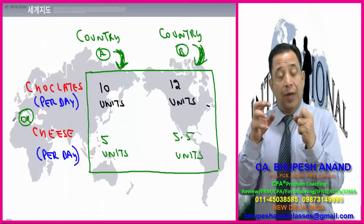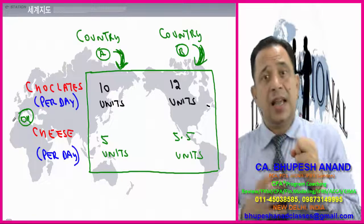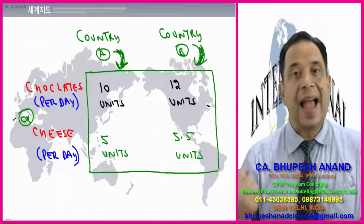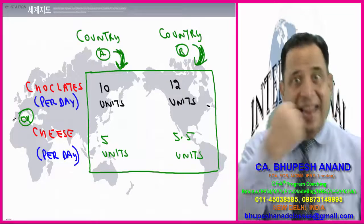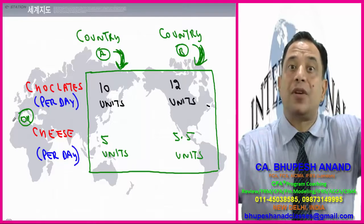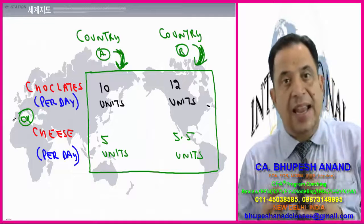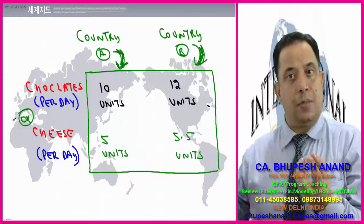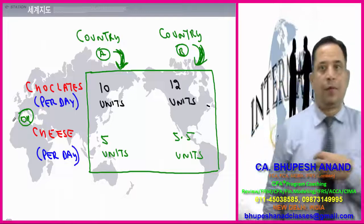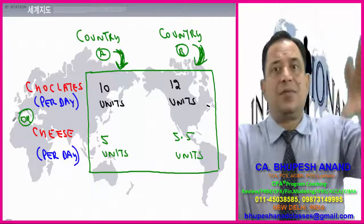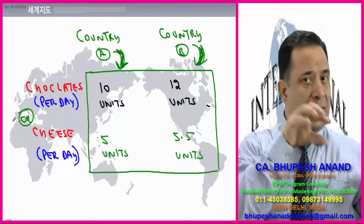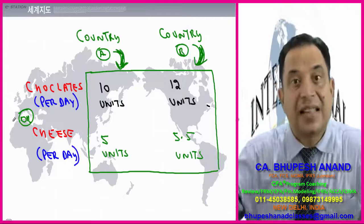Absolute advantage is prima facie and can be easily calculated. Just see: 10 units of chocolates are produced in one day by country A and 12 units by country B. So country B has an absolute advantage in producing chocolates compared to country A, because in one day country A produces only 10 units while country B produces 12 units. Absolute advantage can be directly compared by seeing how many units each country produces with the same resource.